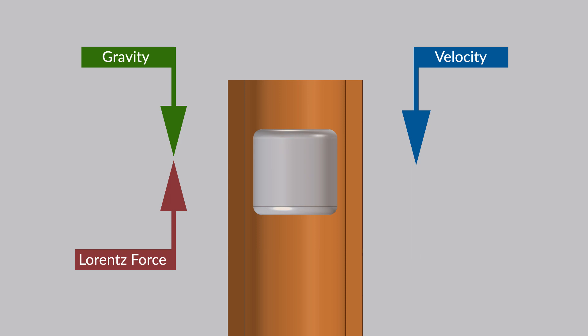As the magnet's velocity increases, so does the opposing force, slowing the motion of the magnet. When the magnetic braking force on the cylinder equals the force of gravity, it reaches terminal velocity.